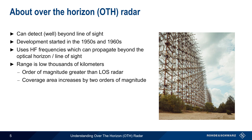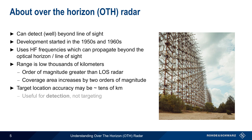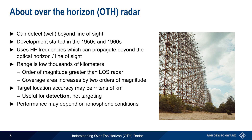However, greater detection range also means lower target location accuracy, or range resolution. In some cases, the maximum location accuracy is on the order of tens of kilometers, meaning that OTH radar is only useful for detection, not targeting. It should also be noted that OTH radar performance may strongly depend on ionospheric conditions, which we will discuss in more detail later in this presentation.